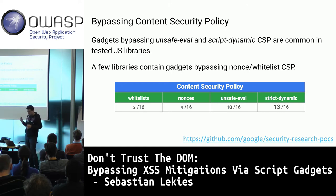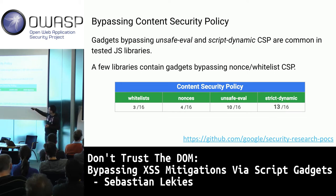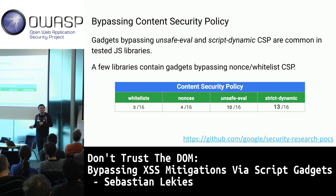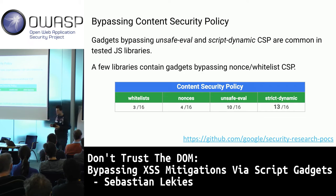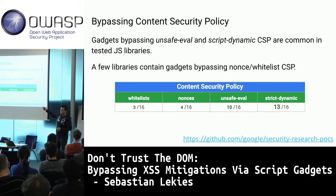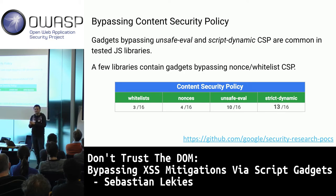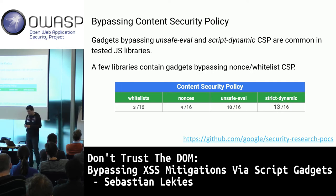Looking at all four CSP modes — whitelist, nonce-based, unsafe-eval, and strict-dynamic — whitelists and nonces are relatively strong, with bypasses in only 3–4 of 16 cases. However, whitelists have other known problems. The unsafe keywords dramatically lower protection capabilities; even strict-dynamic, which was originally called unsafe-dynamic before the standardization committee renamed it, is particularly dangerous.